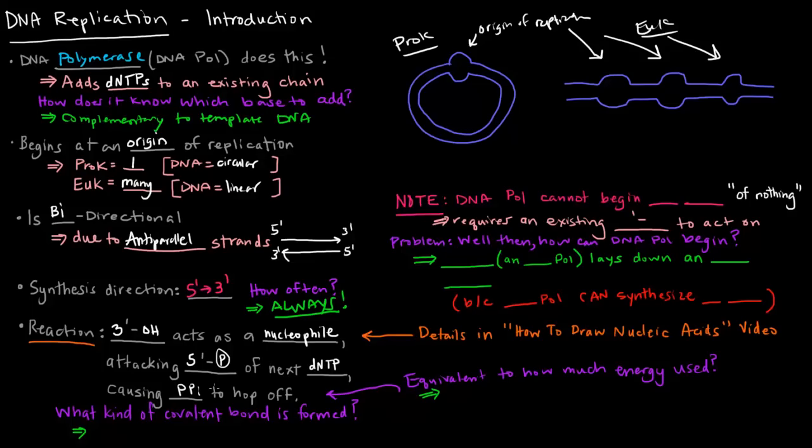When this pyrophosphate hops off, this is the equivalent to two ATPs being used, because this pyrophosphate can be hydrolyzed into two inorganic phosphates. So essentially, it's kind of like taking an ATP to an AMP and using two high-energy phosphate bonds.